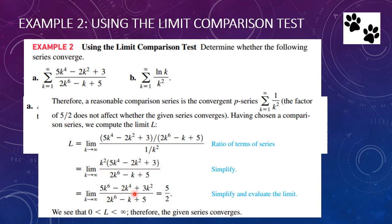Dividing each term by the highest power of k in numerator and denominator, all other terms go to 0, and we're left with just 5 halves. Since the limit is 5 halves — a finite positive number between 0 and infinity — by the Limit Comparison Test the given series converges along with the p-series. So we simplified the expression as k went to infinity, used that as our comparison series removing the 5 halves, and confirmed convergence with a convergent p-series.